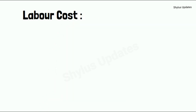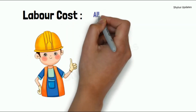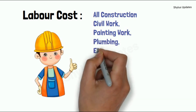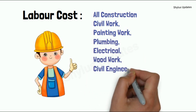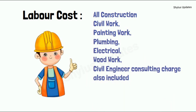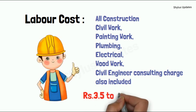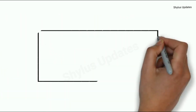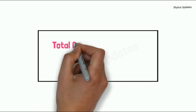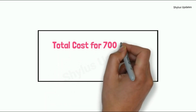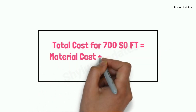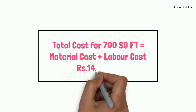Labour cost. Labour cost includes all construction civil work, painting work, plumbing, electrical, woodwork, and civil engineer consulting charges. For that the amount is Rs. 3,50,000 to Rs. 4,00,000. Total cost for a 700 square feet house — material cost plus labour cost — equals Rs. 14,00,000.